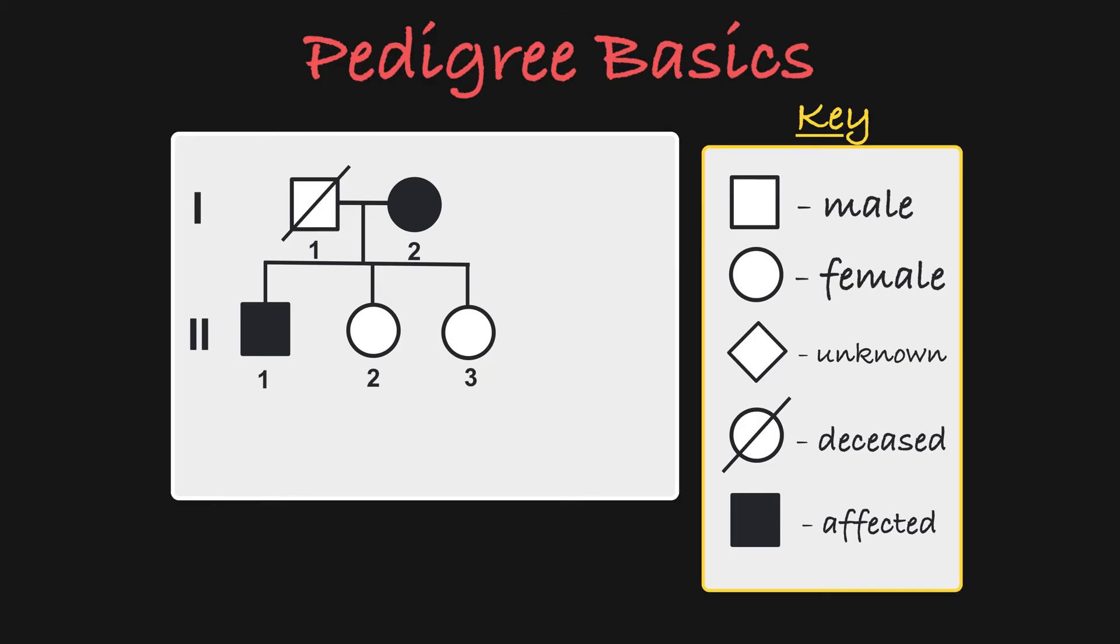So if we look at this pedigree, we can see that the trait we're tracing appears in the mother and in her son, but the father and the two daughters are unaffected, meaning they don't have the trait of interest.